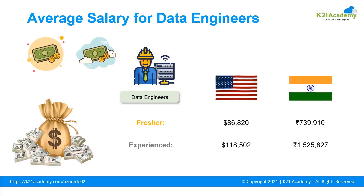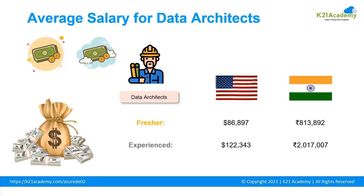What is the average salary of a data engineer and data architect? For a data engineer, a fresher in the United States earns $86,820 per annum, while in India it is ₹7,39,910. An experienced professional in the US earns $1,18,502 and in India ₹15,25,827. For a data architect, a fresher in the US earns $86,897 and in India ₹8,13,892, while an experienced professional earns $1,22,343 in the US and ₹20,17,007 in India.